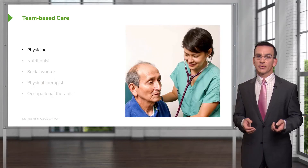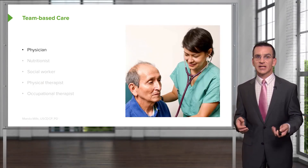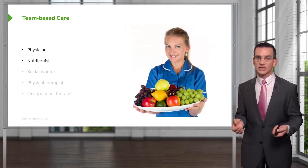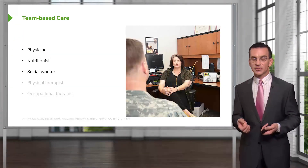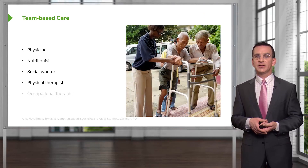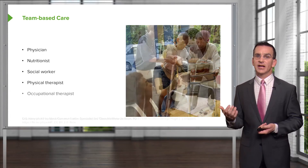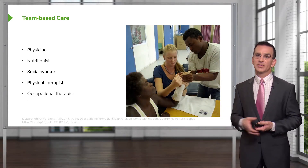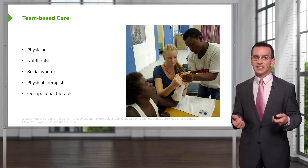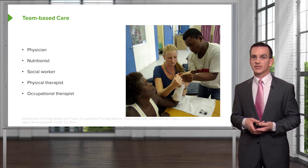Part of that support group is the healthcare team itself. With the patient at the center, it includes a physician. Nutritionists are very helpful. Social workers and some great programs for older adults they can get involved with. Often needing a physical therapist to maintain mobility and safety, and an occupational therapist to help them with those activities of daily living. That's a nice start for a team. I would also consider a mental health professional in that list too.